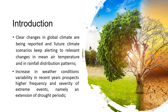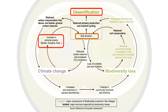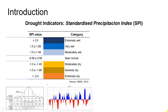Clear changes in global climate are being reported, and future climate scenarios keep alerting to relevant changes in mean temperature and in rainfall distribution patterns. Increasing weather conditions variability in recent years prospects higher frequency and severity of extreme events, namely an extension of drought periods. This change in distribution patterns of extreme events like floods, droughts, and fires contribute to increased soil degradation processes and culminate in the increase of desertification susceptibility of land areas.